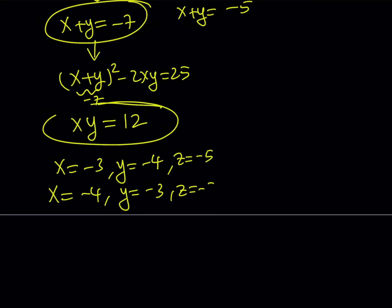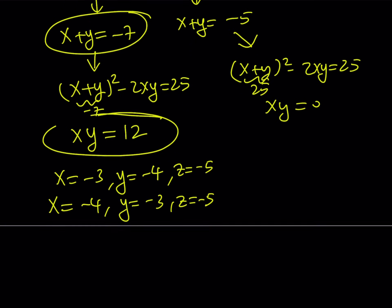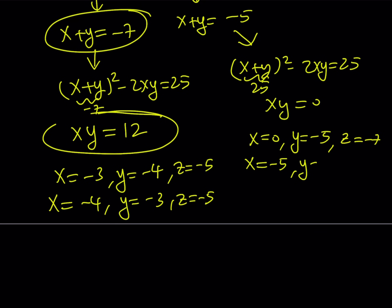For z equals negative 7, x plus y equals negative 5. Using (x plus y) squared minus 2xy equals 25, and since (negative 5) squared is 25, we get xy equals 0. So either x equals 0 and y equals negative 5, or x equals negative 5 and y equals 0, with z equals negative 7 in both cases. That gives solutions (0, negative 5, negative 7) and (negative 5, 0, negative 7).